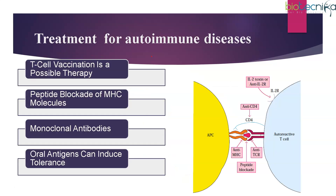Now let us look at treatments for autoimmune diseases. T-cell vaccination is one therapy: the T cells generated against a host antigen are taken, injected into the thymus, and the thymus treats them as self, so it does not generate an immune response. This is very similar to conventional vaccination. Additionally, since inappropriate MHC expression causes issues, these can be blocked with the help of certain peptides.